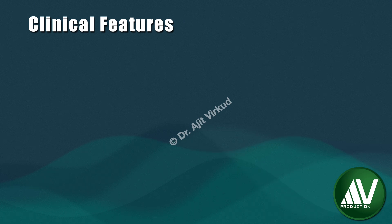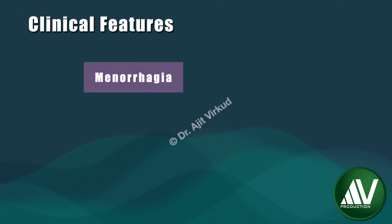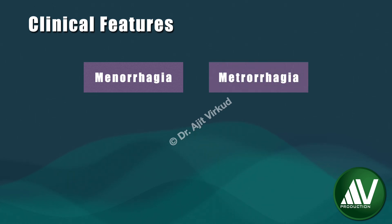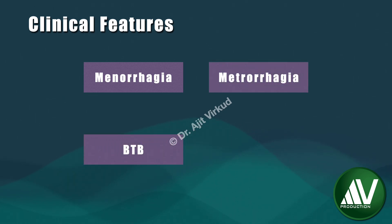Patients with endometrial hyperplasia present with abnormal uterine bleeding in the form of menorrhagia and/or metrorrhagia, unscheduled bleeding also known as breakthrough bleeding, and in older women, post-menopausal bleeding.